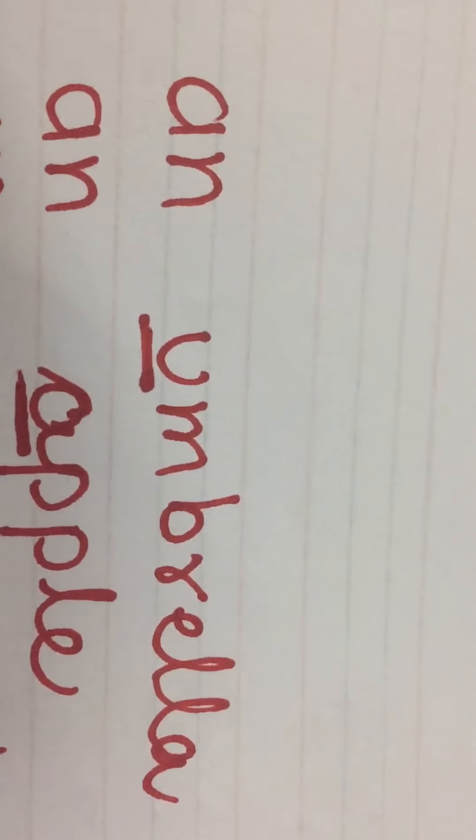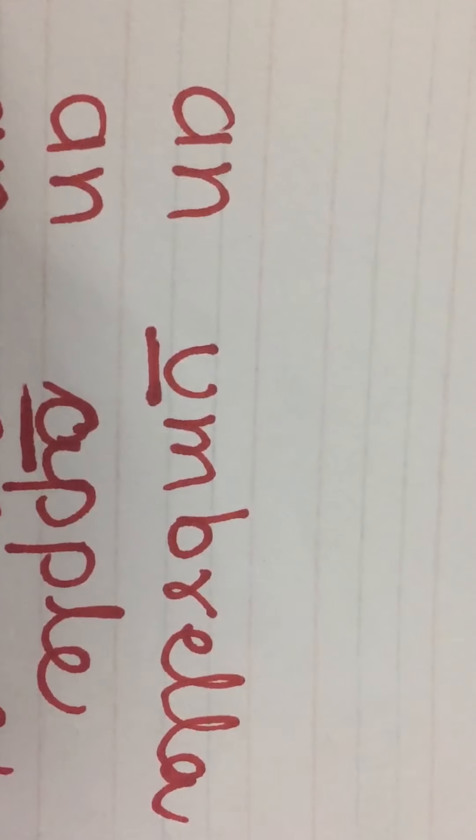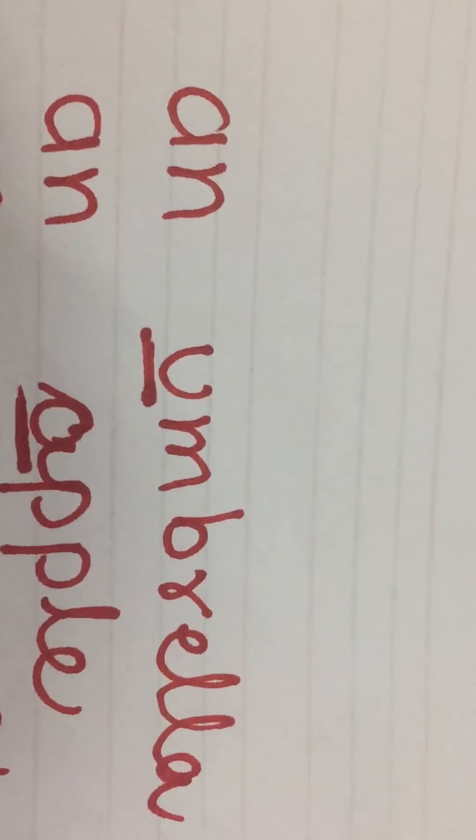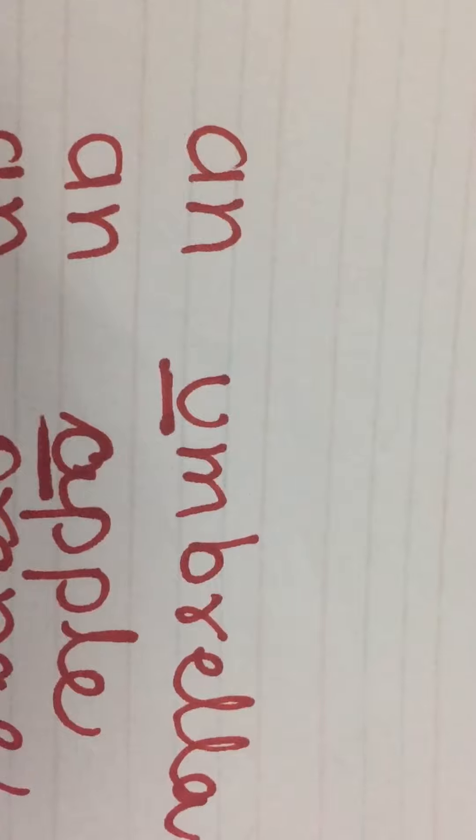Then we take next example that is apple. Apple is also, it begins with a. A is vowel again. So, we have used an before it.